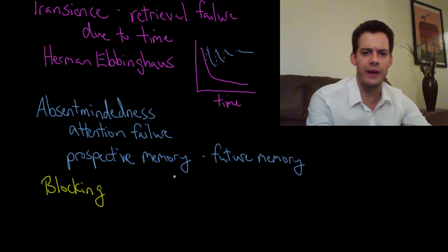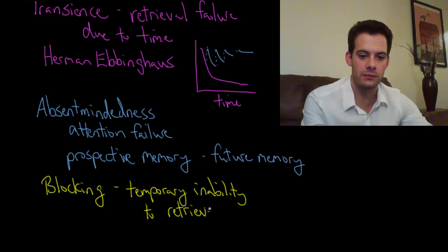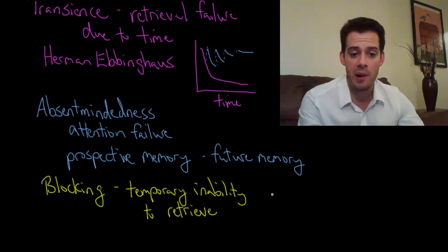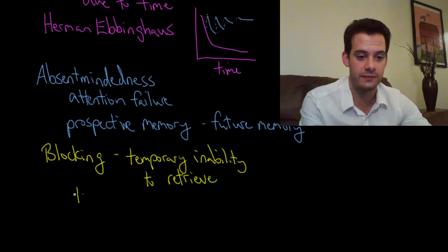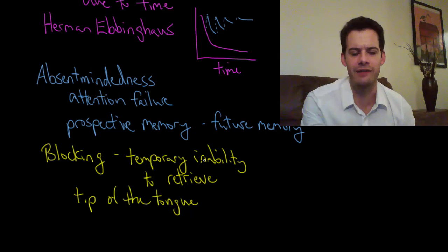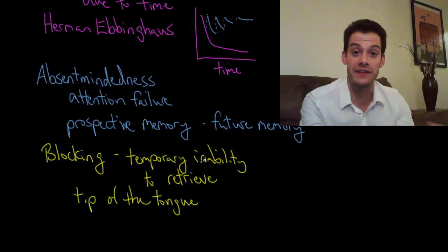And blocking refers to the idea that we have a memory, we've encoded it properly, we've stored it over time, we're just not able to retrieve it at the moment. So it's a temporary inability to retrieve a memory. Okay so you've probably experienced this and the most common way that this blocking occurs is in what's called the tip of the tongue phenomenon. This is the frustrating condition where you have the memory, you know you have the memory and yet you can't seem to access it when you want to. You're like it's right on the tip of your tongue as you said.